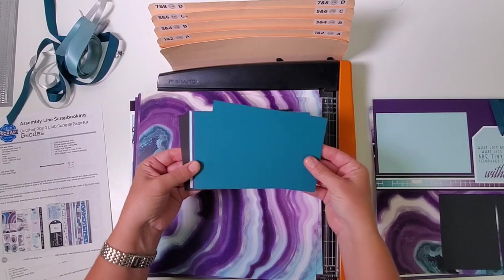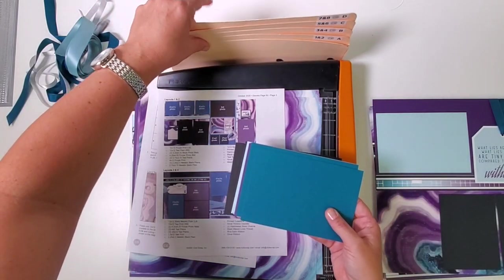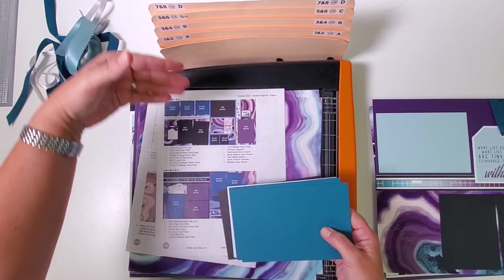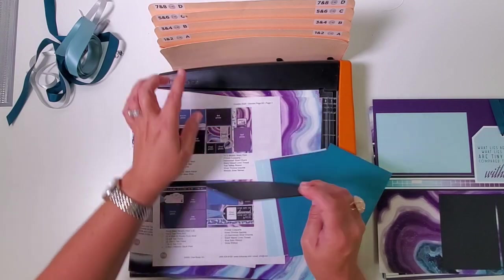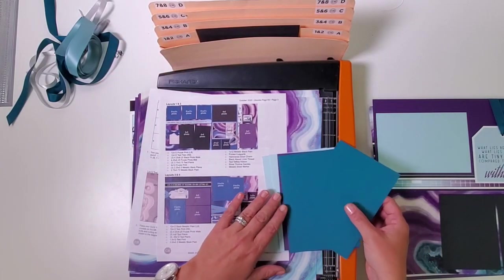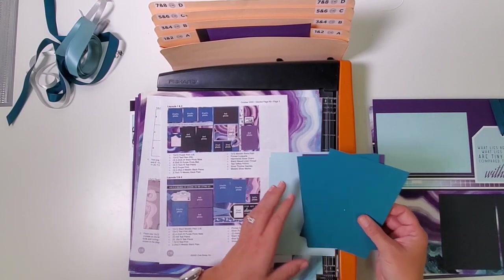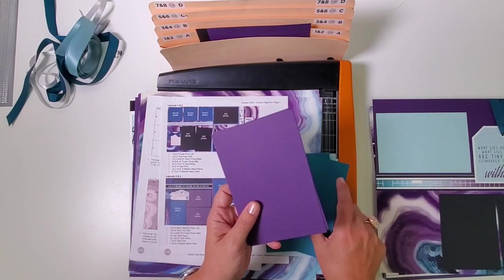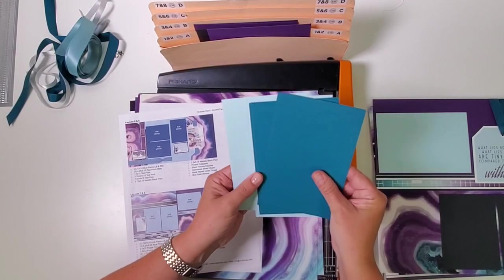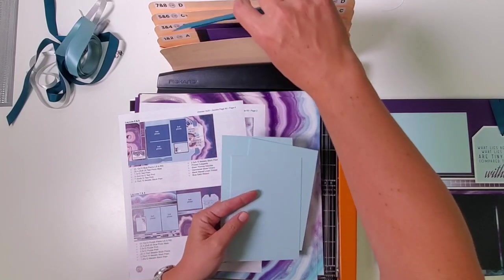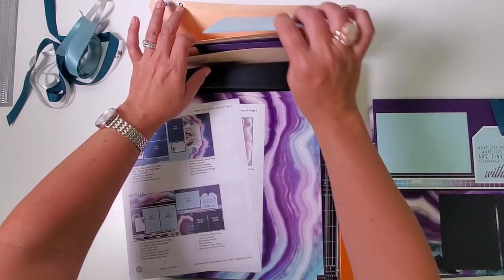Let's begin with the 12 pre-cut photo mats. With the accordion pocket file, every pocket represents one double page spread. Find three black pre-cut photo mats and file them in pockets one and two, along with one purple photo mat. Next, the other two purple mats go in pocket three and four. Three teal photo mats go in pocket five and six, and three blue photo mats end up in pocket seven and eight.